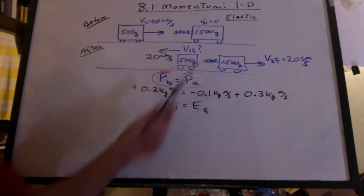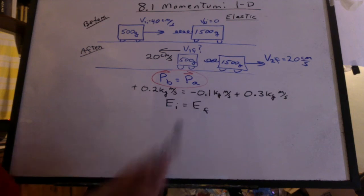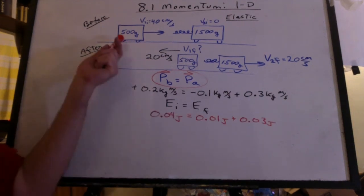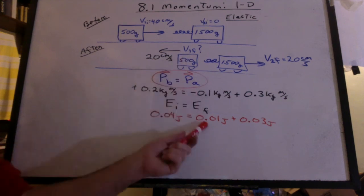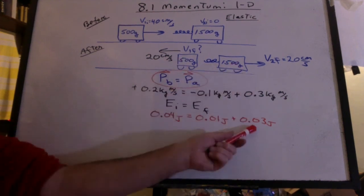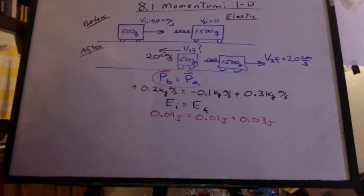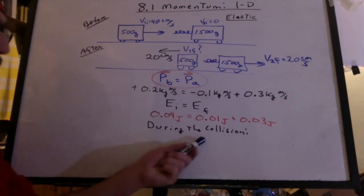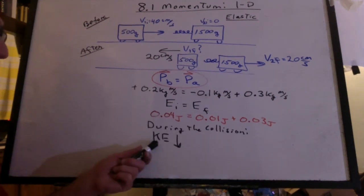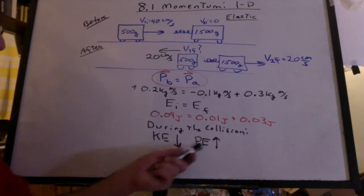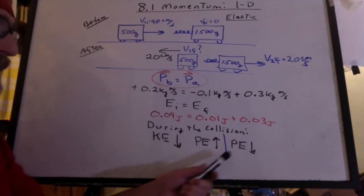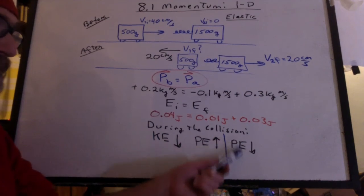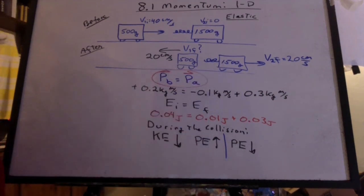Since we have a spring in here, the energy before should equal the energy after. One half m v squared should be equal to one half m v squared plus one half m v squared. It's working out. Now, keep in mind that during the collision, the KE is going to drop a little while the PE of the spring increases. But in the second half of the collision, the PE is going to start to drop as the spring expands, increasing the KE back to the original.